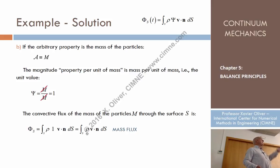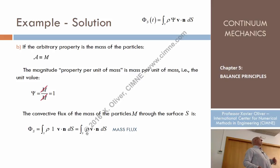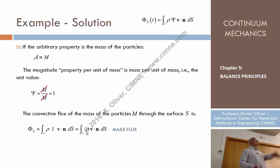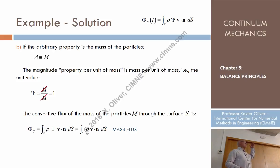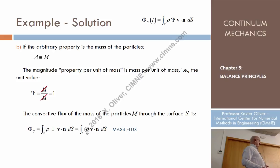The mass flux is similar to the volume flux, but you multiply by the density: density times the normal velocity times the surface area. That gives the amount of mass that crosses a section — in a river or in a channel, for instance.